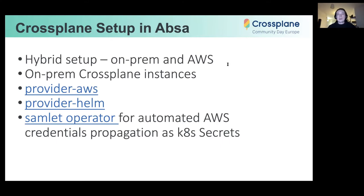Crossplane instances are currently deployed within our on-prem data centers and Kubernetes clusters. We are using a set of Crossplane providers, mainly AWS and Helm, and we use a special SAML operator that we developed to automatically propagate credentials as Kubernetes secrets in an automated way via SAML.